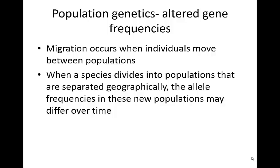Migration can occur when individuals move between populations — populations that are separated geographically. Maybe some of them are on a different island from one another, maybe the water rose and now they're separated. Squirrels that are on different sides of a canyon created by an earthquake can't cross it. When they divide into these populations that are separated geographically, those allele frequencies in the new populations may differ over time.